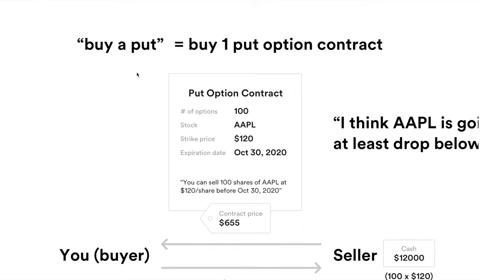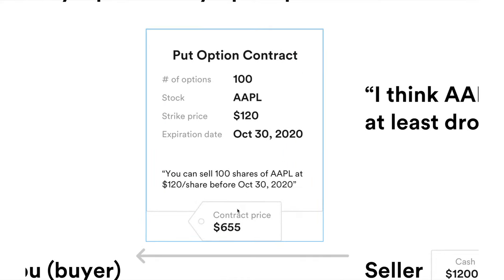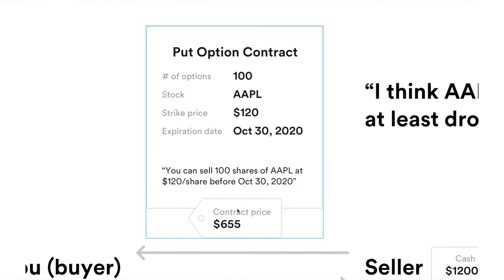The contract also defines the stock, the strike price, and the expiration date. By having this put option contract, you can sell 100 shares of Apple at the strike price of $120 before the expiration date.